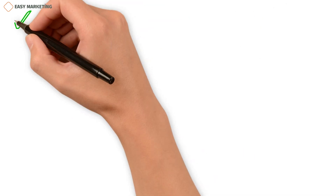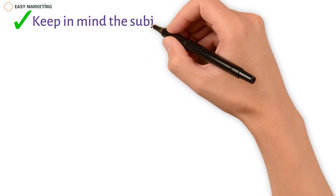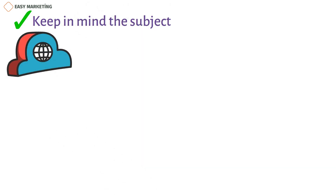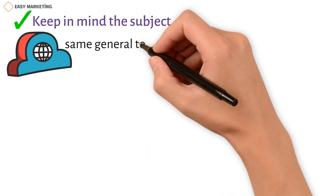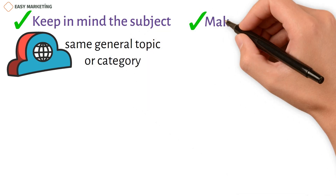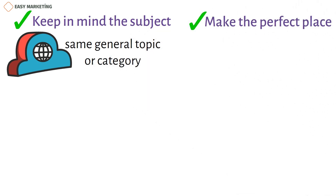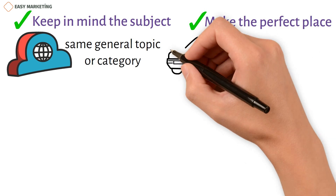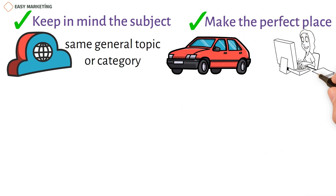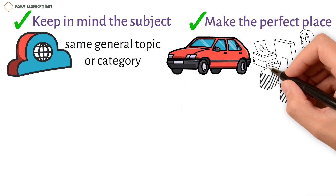Keep in mind the subject — with this feature, you can choose a group of websites that have the same general topic or category as your business. You can also choose which website your display ads will show up on. For example, if you want to reach people who buy a certain model of car, you could put ads on articles about that car or even on pages that review products.